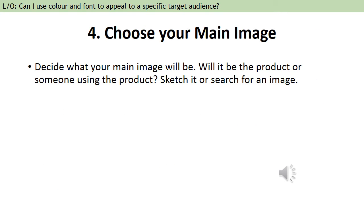Next, you need to choose your main image. If it's going to be the product, you either need to search for it or design it. Are you going to have a person using it? If so, who's the person going to be? You don't really want a 56-year-old accountant playing with a Kinder Egg — that's not going to appeal to children. If you're looking at shampoo, you're generally going to have someone with nice looking hair. It's someone in your target audience and they look happy using it — if they look miserable, it suggests your product isn't very good. So choose your main image, sketch it or search for it.